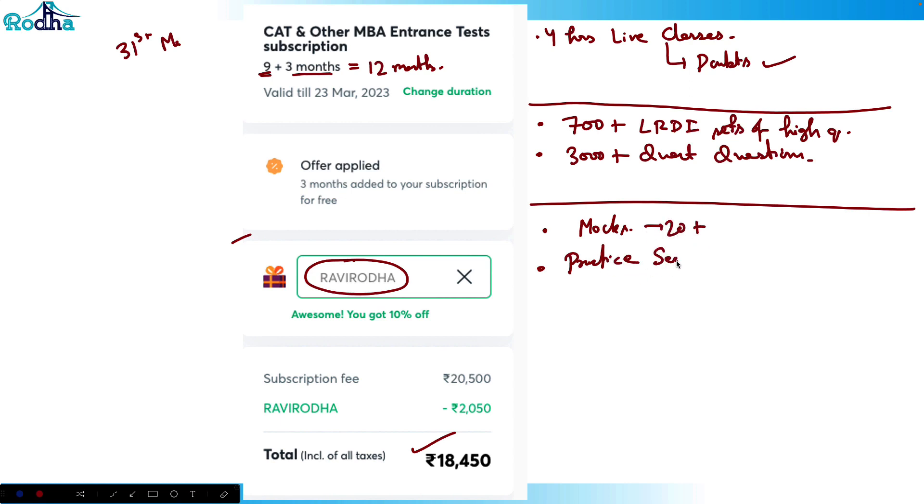There's a practice section with some 9,000 questions in quant plus LRDI. In total, more than 15K questions are available in the practice section, so no book is required. Apart from that, there are top quality verbal faculties.